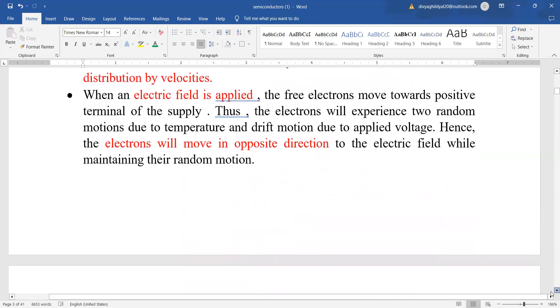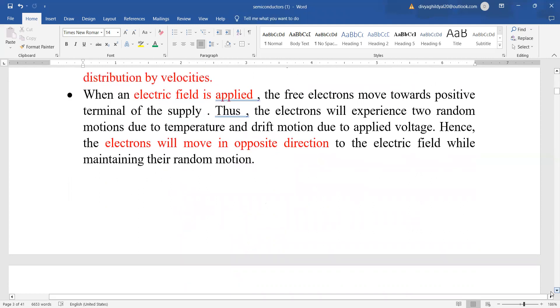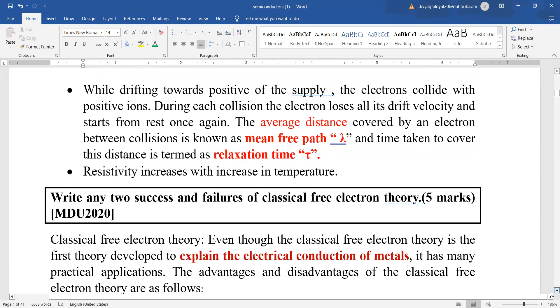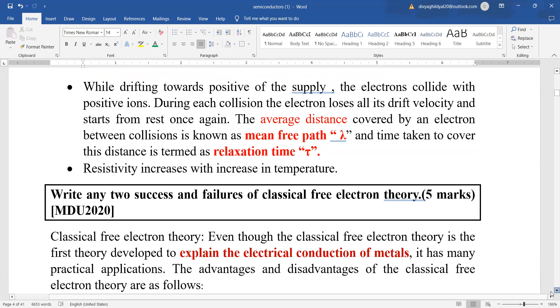The electron velocities in metal obey the classical Maxwell-Boltzmann distribution of velocities. When an electric field is applied, the free electrons rush towards the positive terminal of the supply and experience two random motions: one due to temperature and drift motion due to the applied voltage. The electrons move in opposite direction. The average distance covered by the electron between two collisions is known as mean free path, and the time it takes to cover this distance is known as relaxation time.